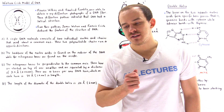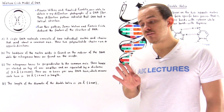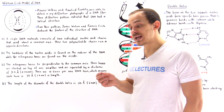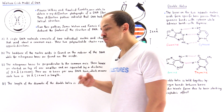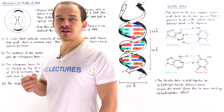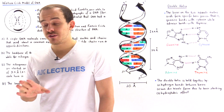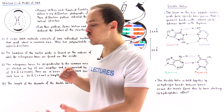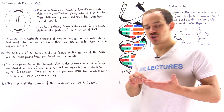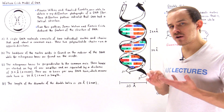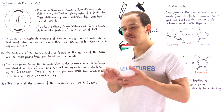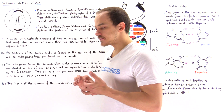In the 1950s, there are four individuals involved in uncovering and discovering what the structure of DNA molecules was. These four individuals include Maurice Wilkins, Rosalind Franklin, James Watson, and Francis Crick.